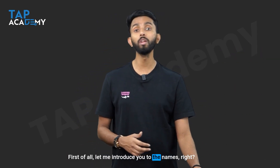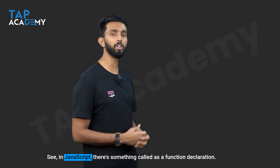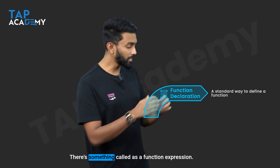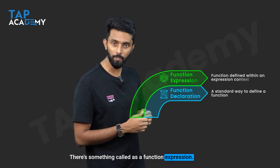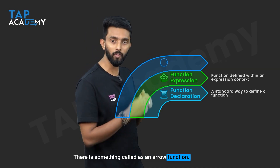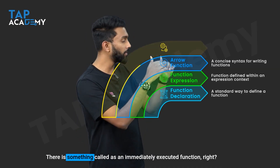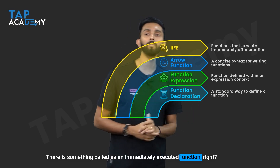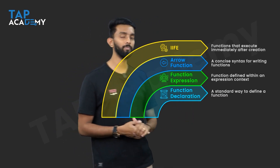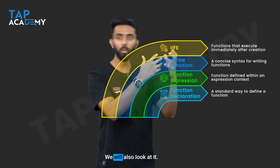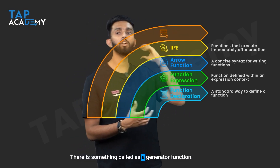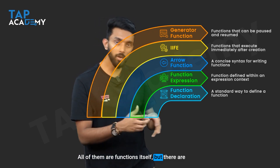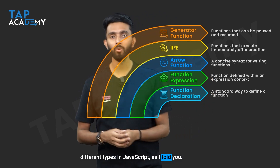First of all, let me introduce you to the names. In JavaScript there's something called a function declaration, something called a function expression, something called an arrow function, something called an immediately executed function — or IIFE — and something called a generator function. All of them are functions themselves, but there are different types in JavaScript.